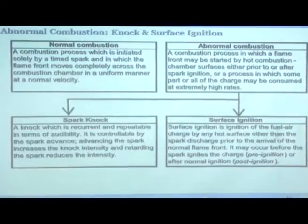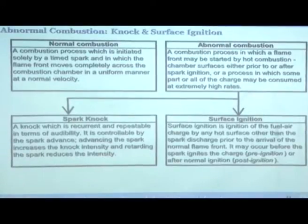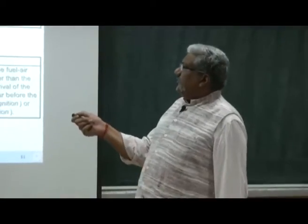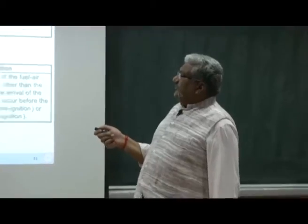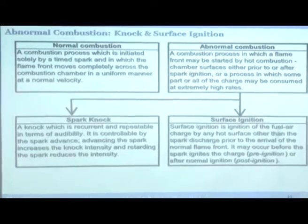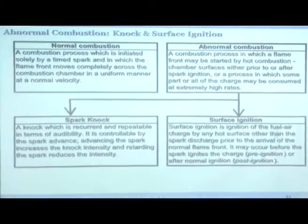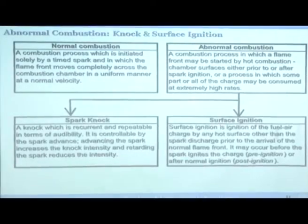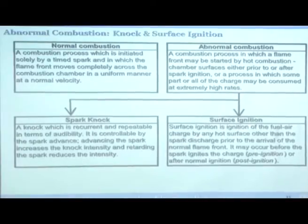Now let us look at abnormal combustion. There are two types: normal combustion and abnormal combustion. Normal combustion is a process initiated solely by a timed spark, in which the flame front moves completely across the combustion chamber in a uniform manner at a normal velocity. You applied the spark at the intended time and the flame front moves from the spark plug to the piston consuming the entire charge. Any variation from this is called abnormal combustion.